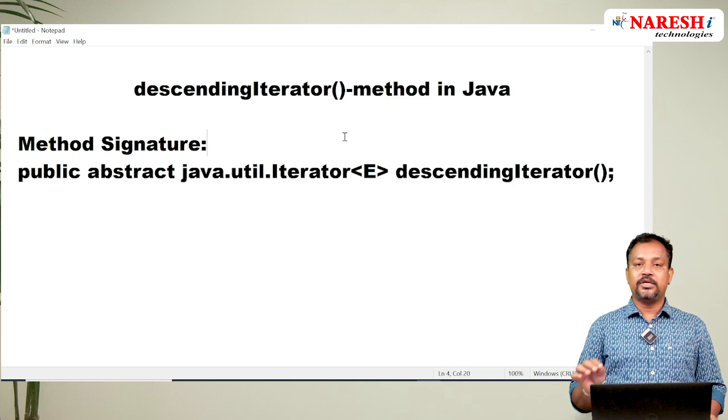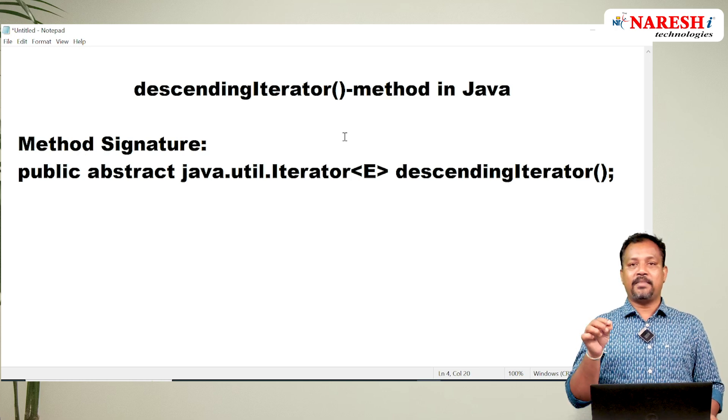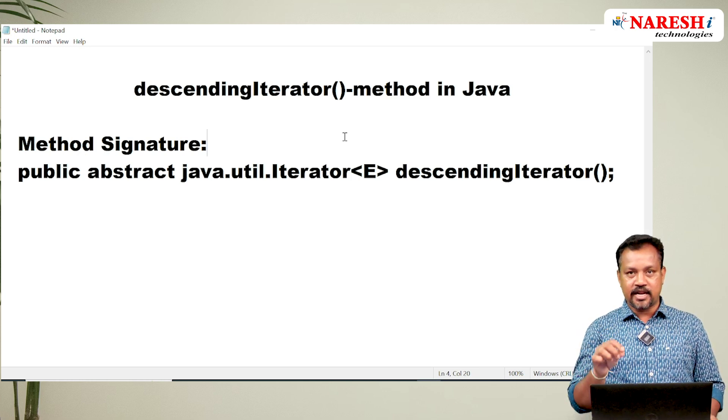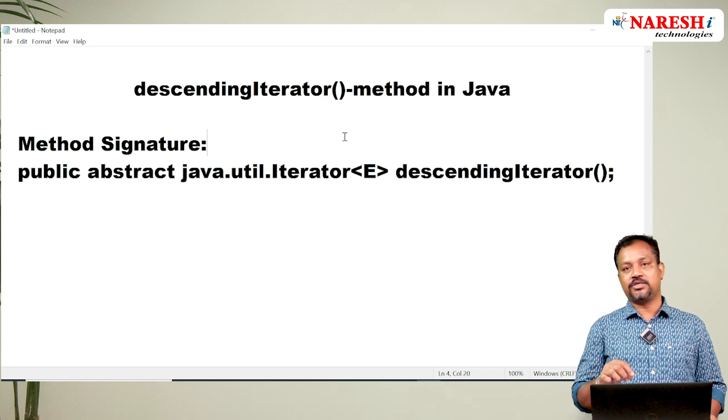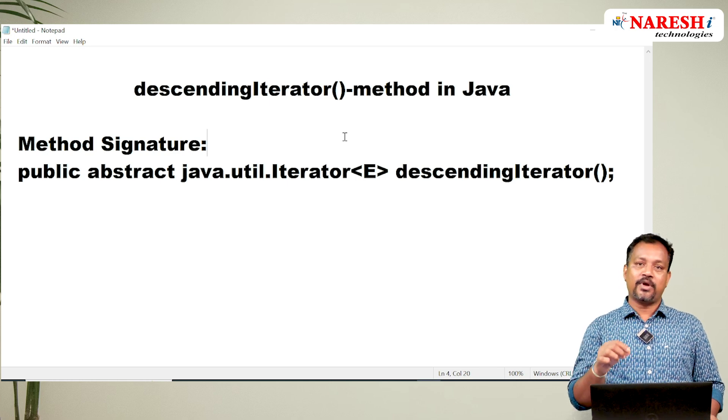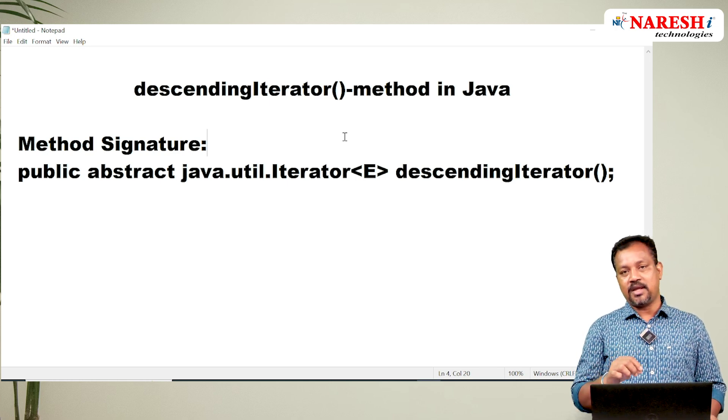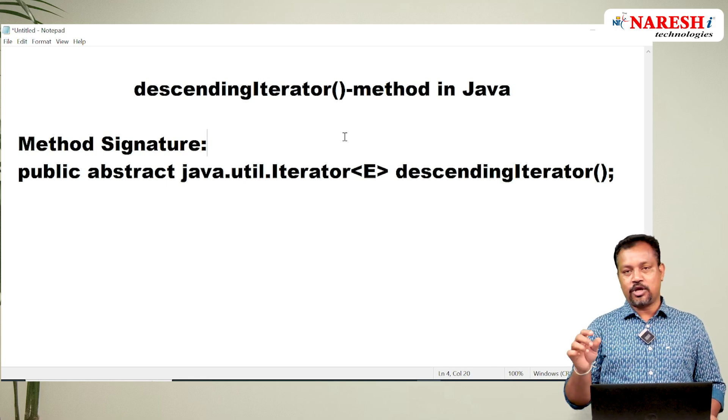What is happening? Descending iterator method internally creates one implementation object of Iterator. That implementation object of Iterator will hold the reference of Deque object. Deque object means Deque implemented object - that may be LinkedList object or ArrayDeque object.